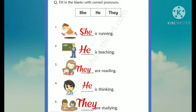And the last, blank are studying. Two girls are there. And for two girls, we use they. They are studying.